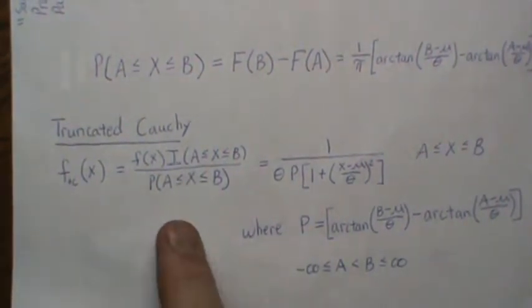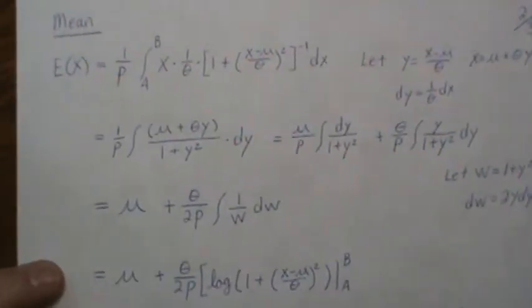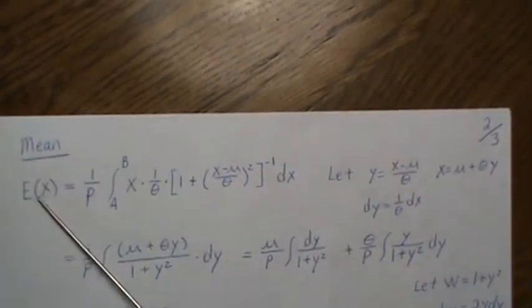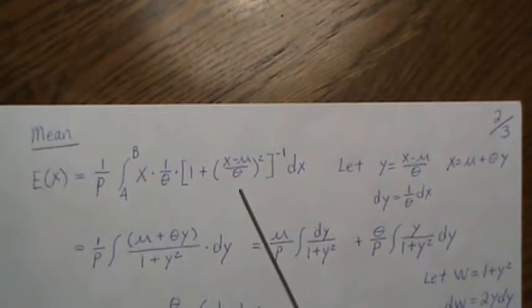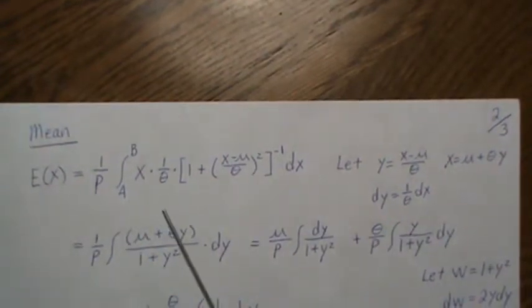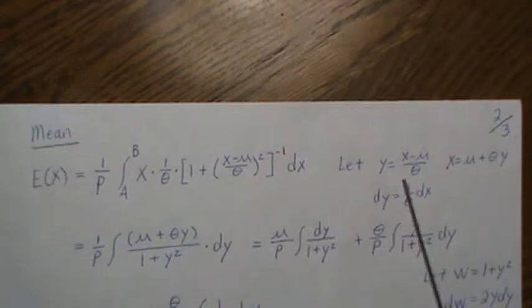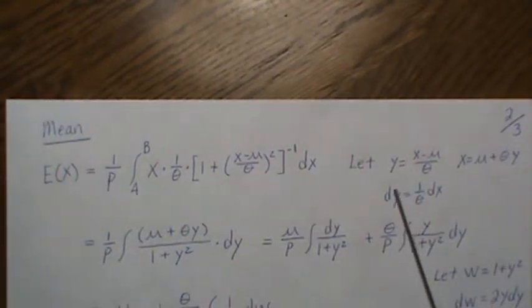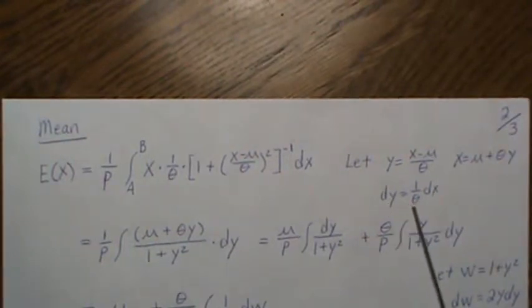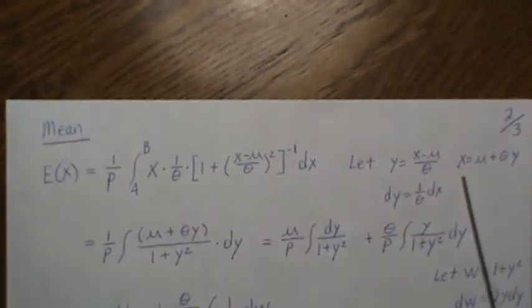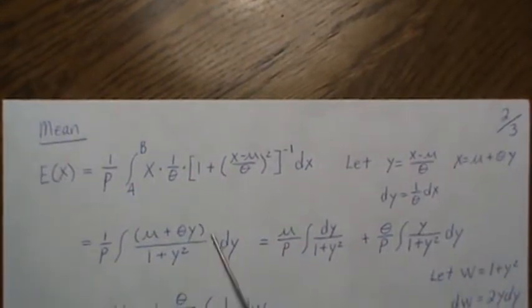So now with this, let's prove or show or calculate the mean. So we expect the value of X as you stick in X times the density. And then the 1 over P is part of this density, but it's constant. So we take it out. So we substitute Y equal X minus mu over theta, take the derivative, back solve for X, which we'll need for when we plug in there. And then we get this.